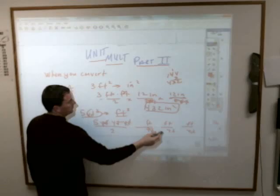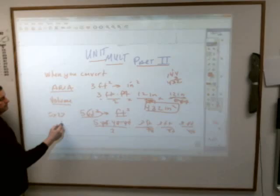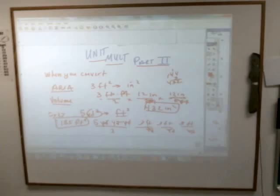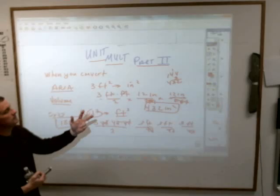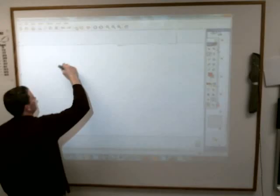This is review — not new information. There are 3 feet in a yard, so the actual answer is going to be 5 times 27, which is 135 feet cubed. So when you convert area, you think doubling. And when you convert volume, you think tripling.